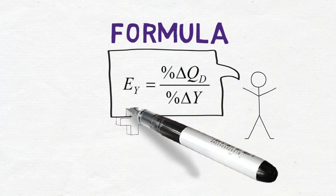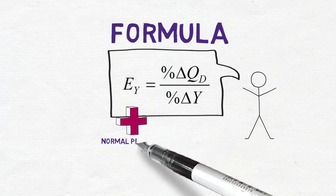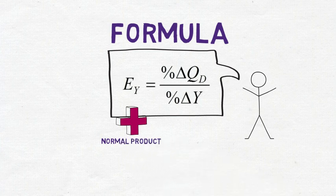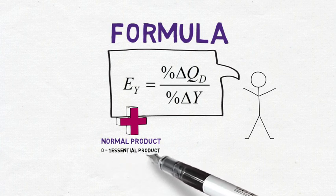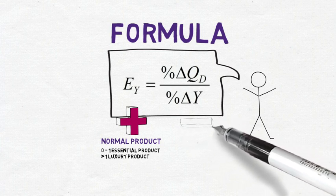Remember to categorize your answer. If you obtain a positive answer you are dealing with a normal good. In more detail, if your answer is between zero and one you are dealing with an essential product like food and clothing. If your value is larger than one, it is a luxury product.